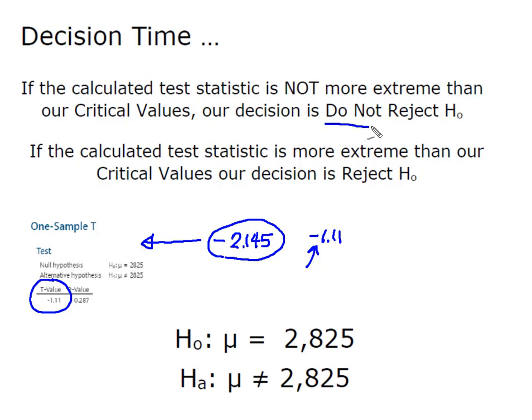My decision is do not reject H₀. There is sufficient evidence to support the athletic director's claim that the average attendance is 2,825.